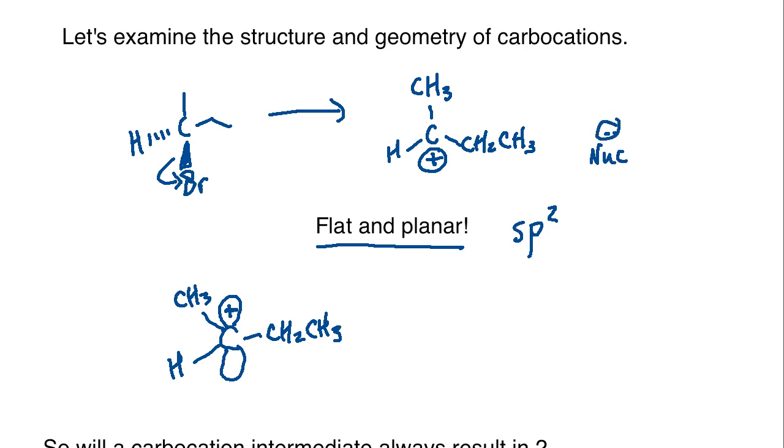Once the carbocation forms, the nucleophile would come in and would attack the carbocation. Now why is it so important that the carbocation is flat and planar? Well, if you have something that is flat and planar - right, so imagine something like a sheet of paper - you can attack from a steric hindrance standpoint. The substituents are hanging out to the side here. You can attack from the top without any type of hindrance and you can attack from the bottom without any type of hindrance.